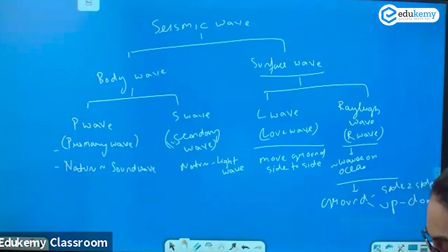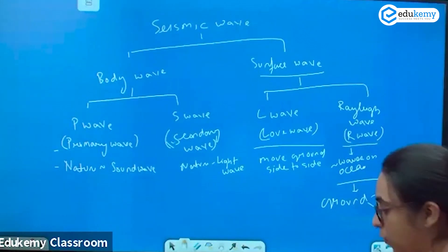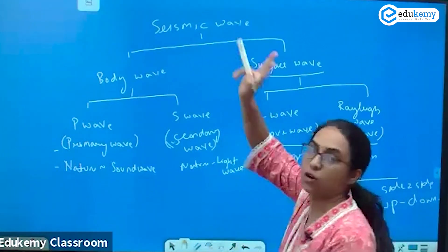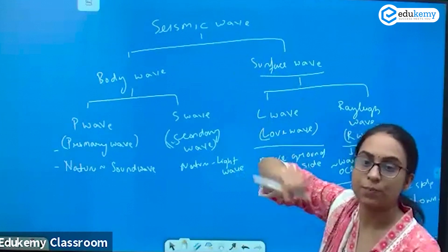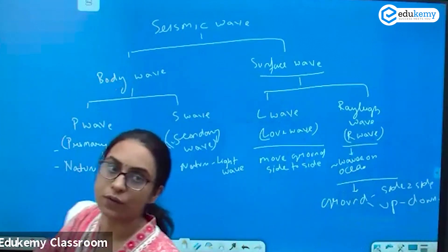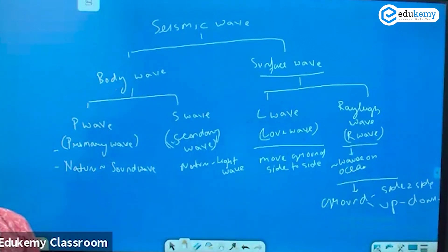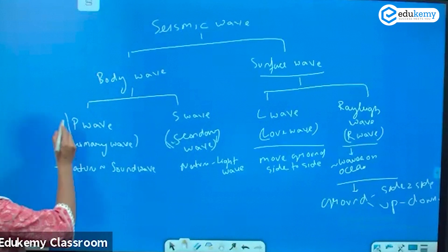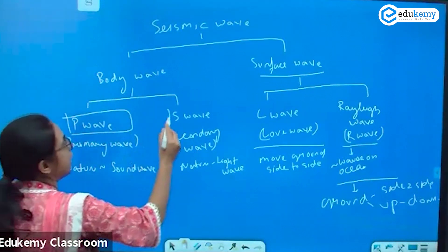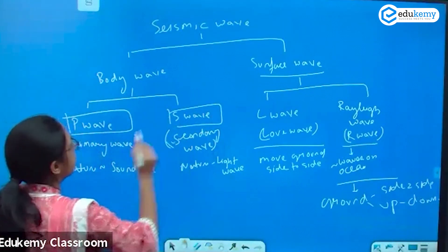So, seismic waves are of two types: the body wave and the surface wave. The body waves are of two types — the P wave and the S wave.